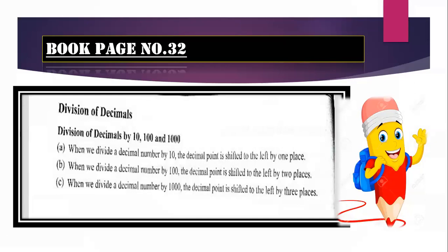Division of decimals by 10, 100, and 1000. The very first thing we are going to touch today is division of decimals by 10, 100, and 1000. If you remember, yesterday we did this with multiplication. And yesterday I told you it would be totally vice versa of multiplication. Division and multiplication are opposite to each other.